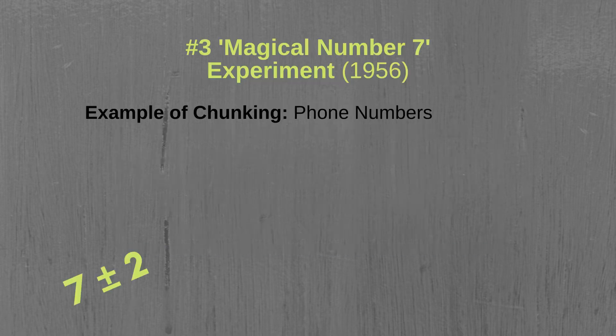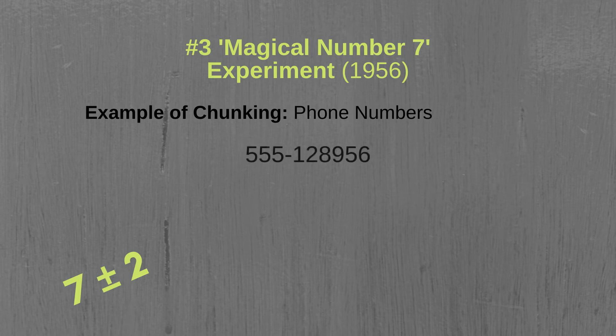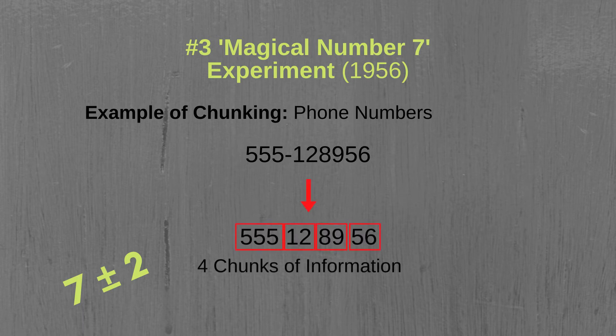A common example of chunking in everyday life is how we memorize phone numbers. Rather than memorizing a phone number by memorizing each individual digit, we memorize it in chunks of information — for instance, in 4 chunks such as 555-12-89-56.